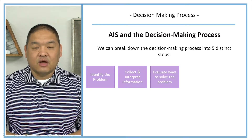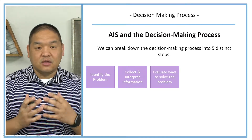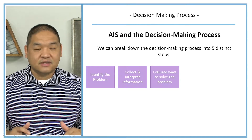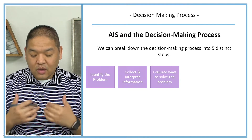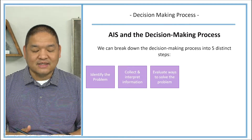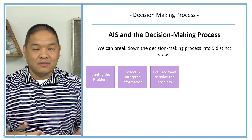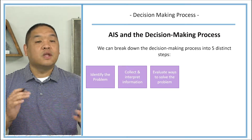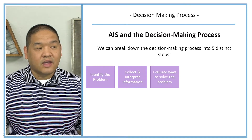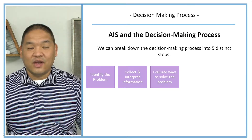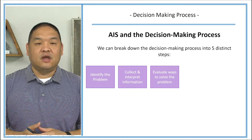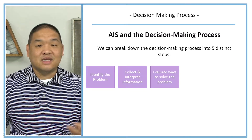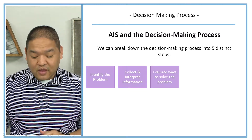The third step is to evaluate ways to solve the problem. This may or may not include us, but if it's a financial problem it obviously will. For instance, that might mean re-looking at the budget and figuring out that we need to cut expenses by 10% because of whatever issues. The accountants would then go in, tweak the budget, and find a way to take 10% out so that we can achieve that goal.